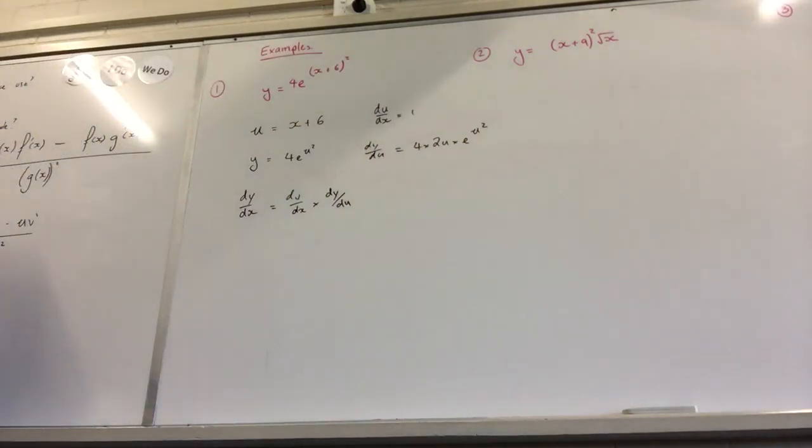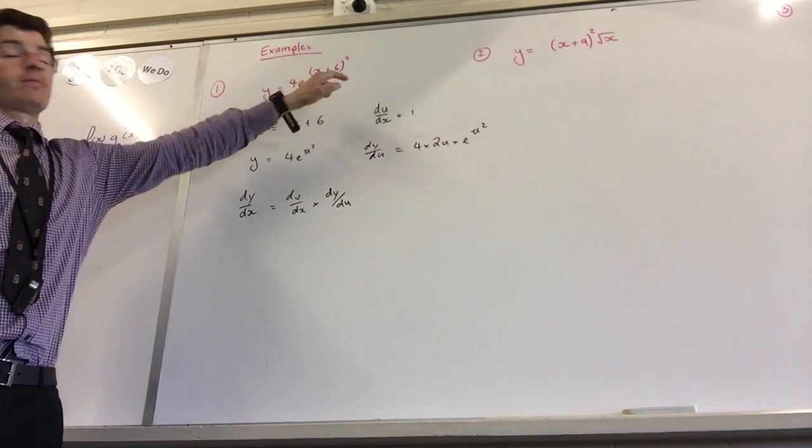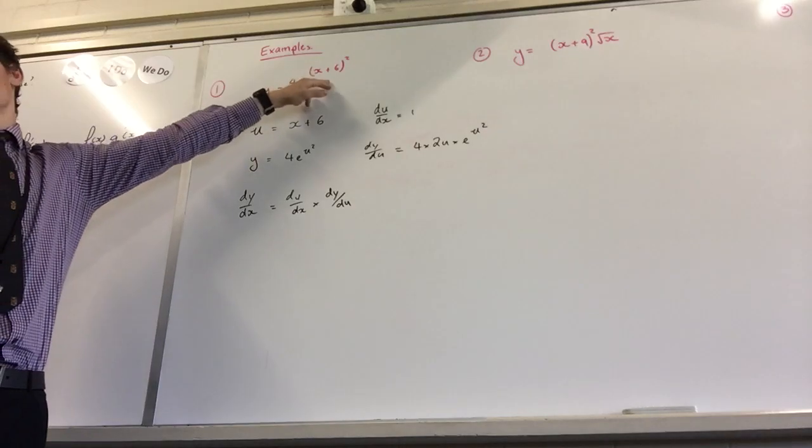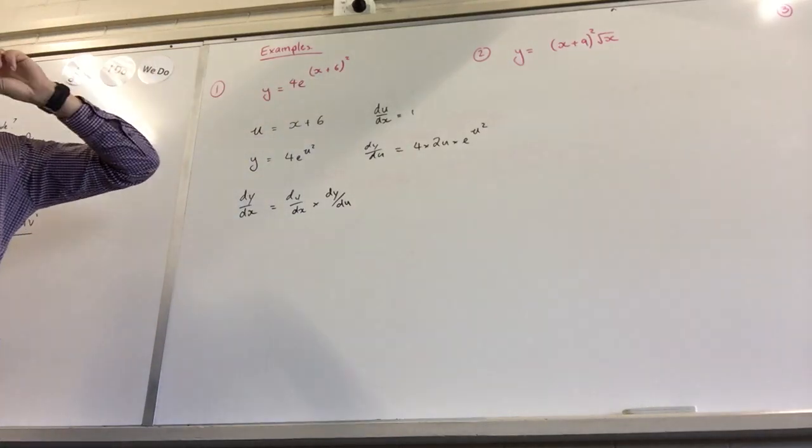How do you know what to let u be? It's the thing inside the bracket, it's always just going to be inside and not with the power. Now if that wasn't e, so if that was 7 to the power of that, you would need to use the chain rule twice.